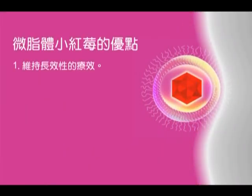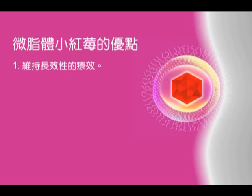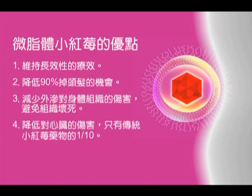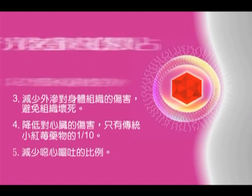微脂體小紅媒的優點：1. 維持長效性的療效；2. 降低90%掉髮的機會；3. 減少外漏對身體組織的傷害，避免組織壞死；4. 降低對心臟的傷害，只有傳統小紅媒藥物的十分之一；5. 減少噁心嘔吐的比例。